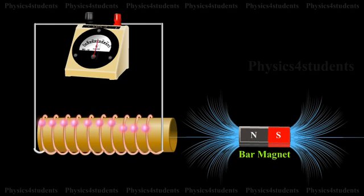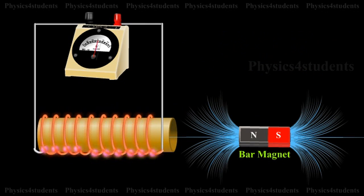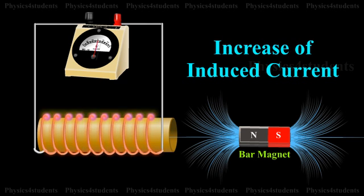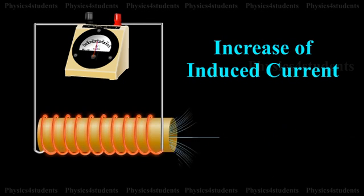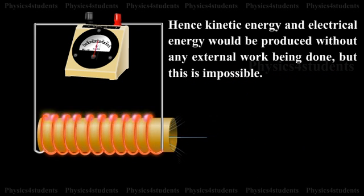If, on the contrary, the direction of the current were to help the motion of the magnet, it would start moving faster, increasing the change of magnetic flux linking the coil. This results in the increase of induced current. Hence, kinetic energy and electrical energy would be produced without any external work being done. But this is impossible.